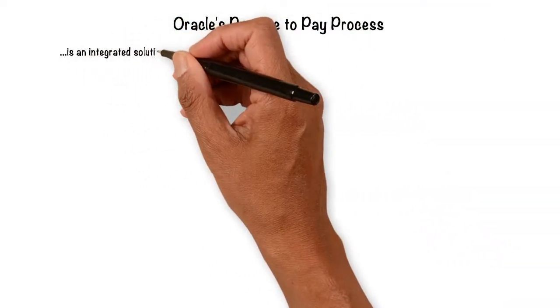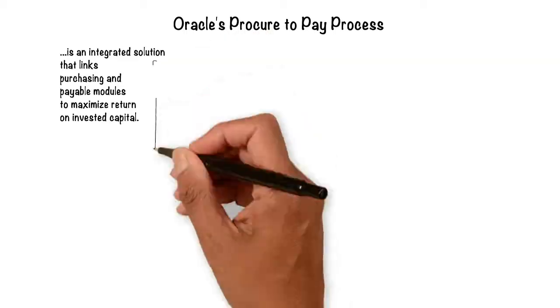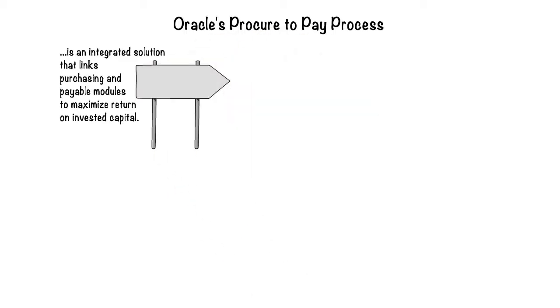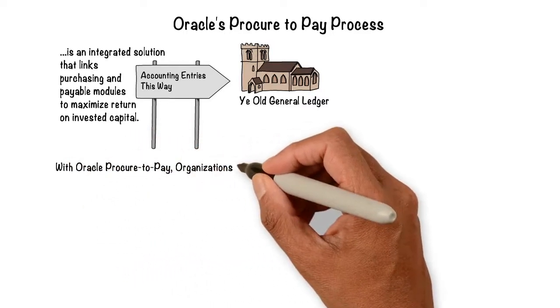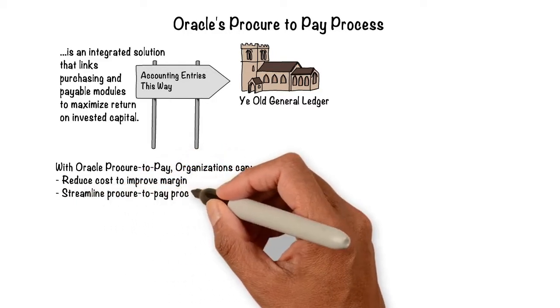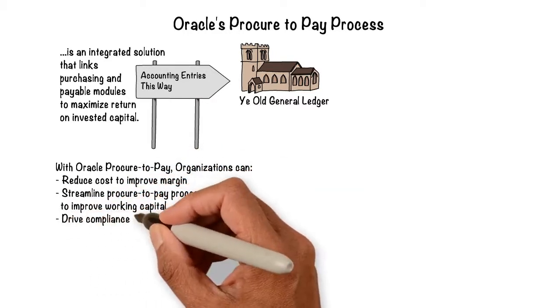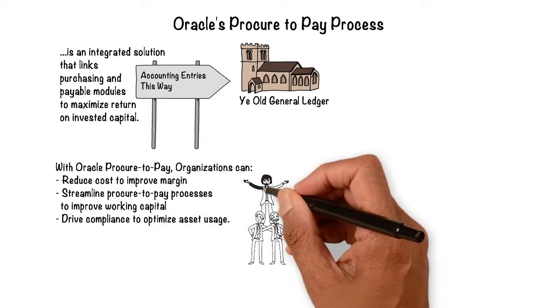Oracle's Procure2Pay process is an integrated solution that links the purchasing and payables modules to maximize return on invested capital, which integrates to sub-ledger accounting and general ledger for accounting the transactions. With Oracle Procure2Pay, organizations can reduce costs to improve margin, streamline Procure2Pay processes to improve working capital, and drive compliance to optimize asset usage.